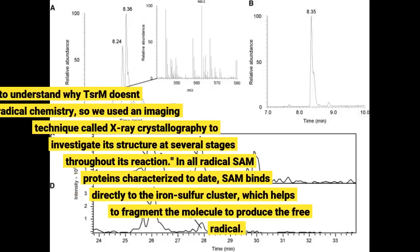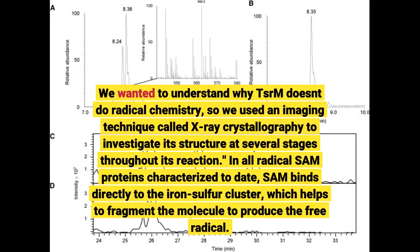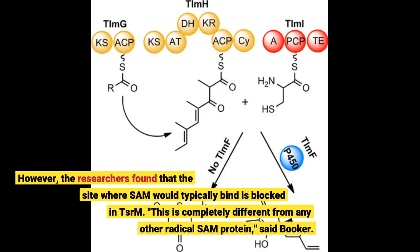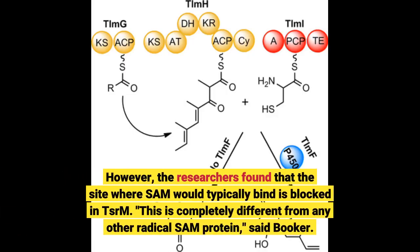We wanted to understand why TSRM doesn't do radical chemistry, so we used an imaging technique called X-ray crystallography to investigate its structure at several stages throughout its reaction. In all radical SAM proteins characterized to date, SAM binds directly to the iron-sulfur cluster. However, the researchers found that the site where SAM would typically bind is blocked in TSRM.